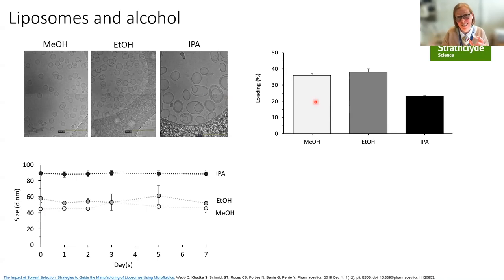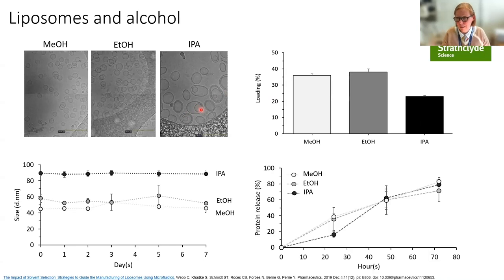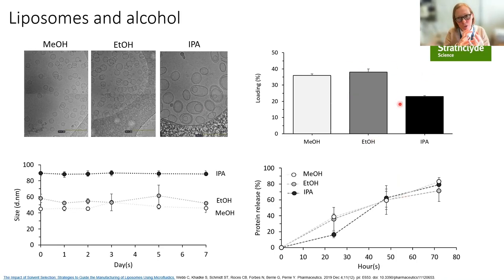In terms of loading — and this is protein rather than mRNA, because we wanted something that wouldn't electrostatically bind — methanol and ethanol gave us reasonable loading around 40%. IPA reduced it, and we assume it's because the multiple bilayers give less space to load. In terms of release, all three have the same release properties once you normalize for the initial incorporation. So you can control particle size with choice of solvent for liposomes, but not for LNPs.